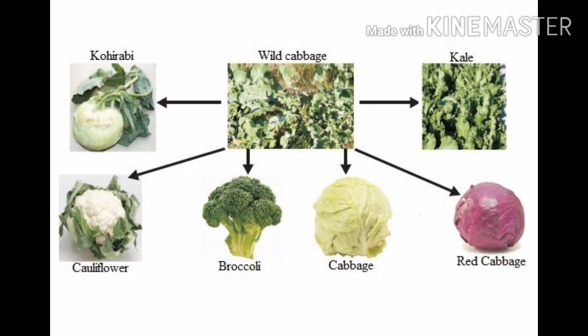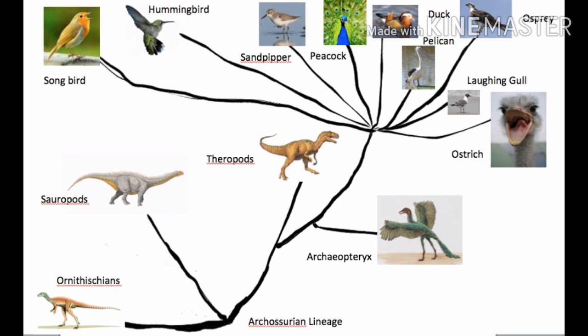The tracing of evolutionary relationships depends on the idea that changes in DNA during reproduction are the basic events of evolution. This method is extensively used today — it defines evolutionary relationships by comparing the DNA of different species and gives us a direct estimate of how much DNA has changed during the formation of different species.